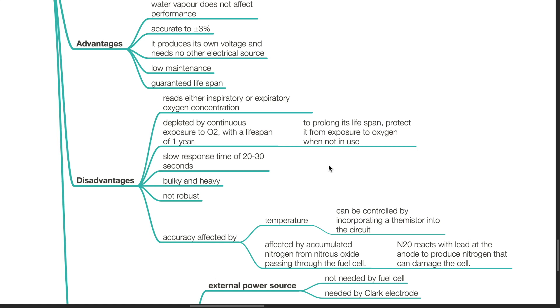Further disadvantages: it has a slow response time of 20 to 30 seconds, it is bulky and heavy, not robust, and accuracy is affected by temperature, which can be controlled by incorporating a thermistor into the circuit. It is affected by accumulated nitrogen from nitrous oxide passing through the fuel cell, as nitrous oxide reacts with the lead anode to produce nitrogen that can damage the cell.